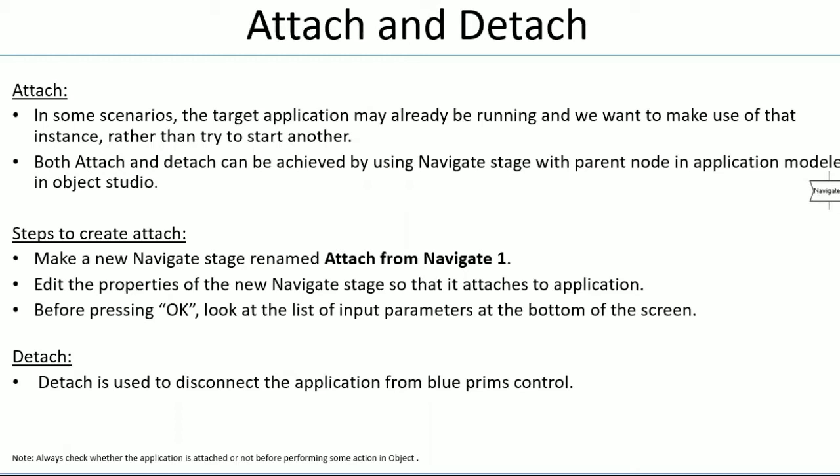Both attach and detach can be achieved using a navigation stage with the parent node in the application modeller in Object Studio. I'm going to show you how to use attach, as we are going to use the root element in the application modeller with the navigation stage for attach and detach functionality. To create attach, make a new navigation stage and rename it to 'attach'. From the action drop-down you can select attach - you will have a lot of options based on the root element.